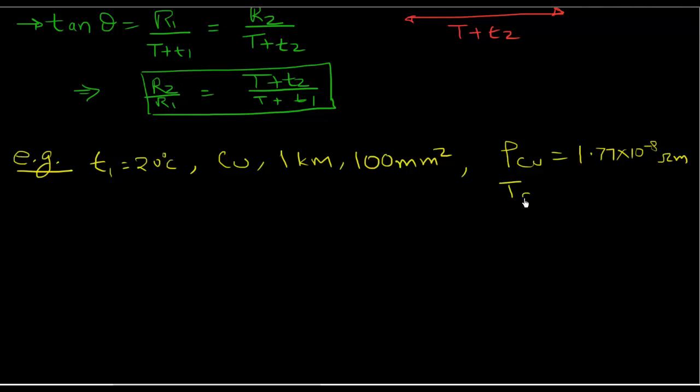We know that the rho of copper, the resistivity of copper is 1.77 times 10 to the power minus 8 ohm meter. And we're given the other constant, the temperature constant here as well. For copper it is 241 degrees centigrade.